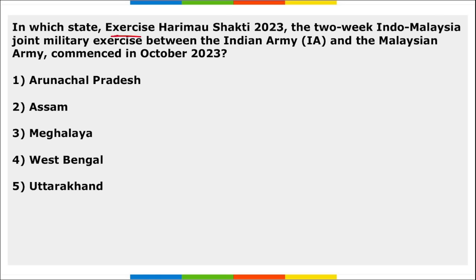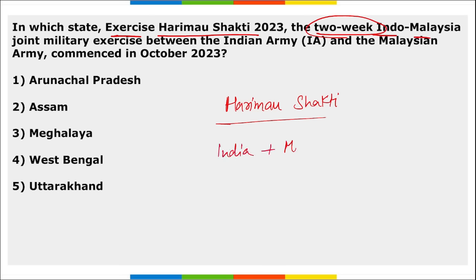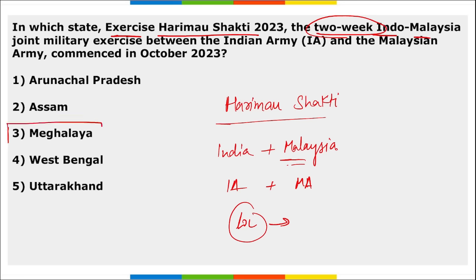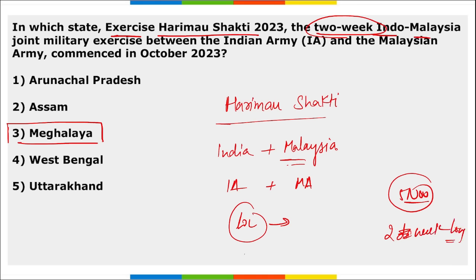Next: in which state was Exercise Harimau Shakti 2023, a two-week-long Indo-Malaysia joint military exercise, held? This exercise was between the Indian Army and the Malaysian Army. The location where it was held is Meghalaya. It was held in Meghalaya till 5th November and was a two-week-long exercise. The last edition in 2022 was held in Malaysia, but this 2023 edition was held in Meghalaya.